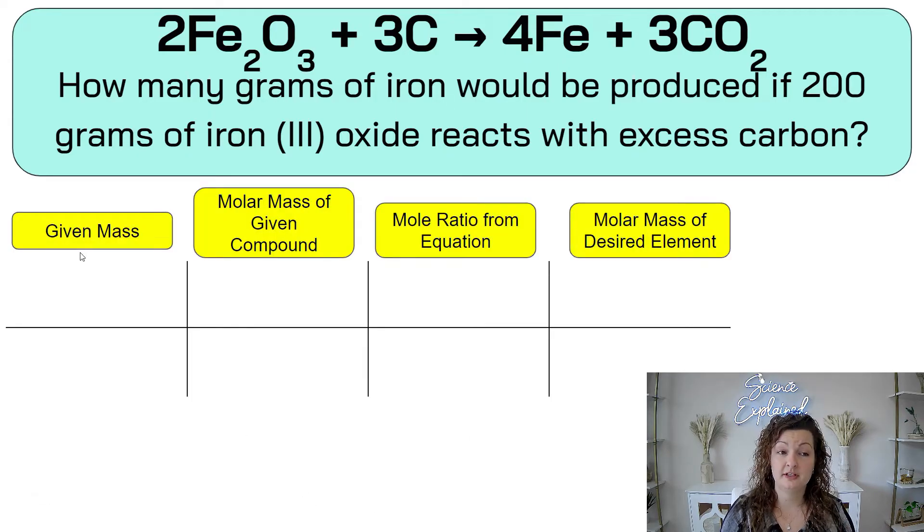You always start with what you're given. In this case, we're going to start with our given mass. Then we're going to jump on over, and we're going to do our molar mass of our given compound. And that's going to be the ratio. And then we're going to do the mole to mole ratio from our balanced chemical equation. And then we're going to end it with the molar mass of our desired element or compound, whichever one it is that the question asked for.